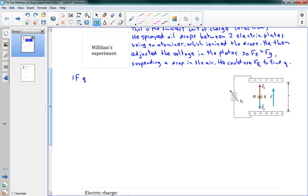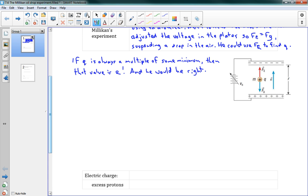So what he says is, if Q is always a multiple of some minimum value, then that value is E. And he would be right. His theory would be right. So that's what he's going for. He's trying to find out, if I have all these drops, are they all going to end up having multiples? Are their Qs all going to be a multiple of some E value?